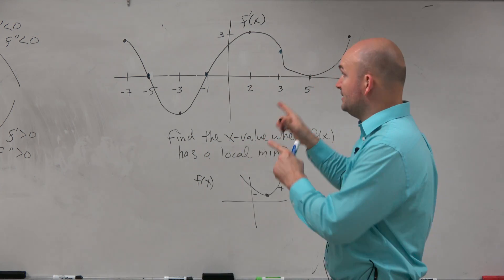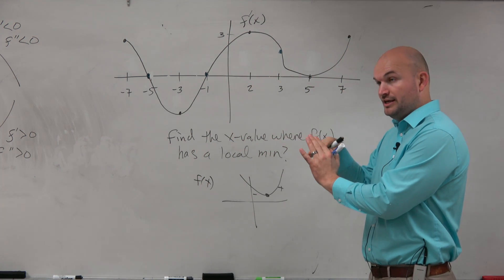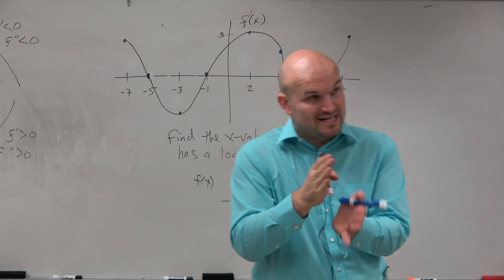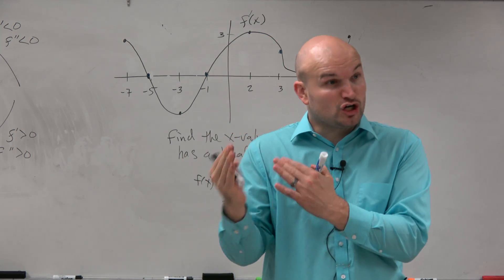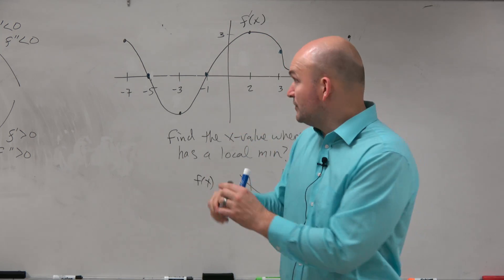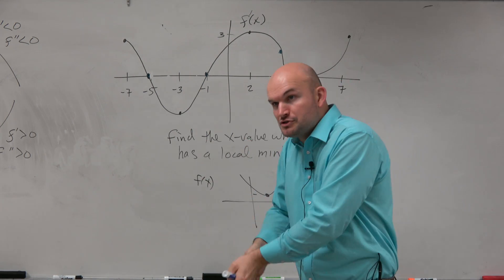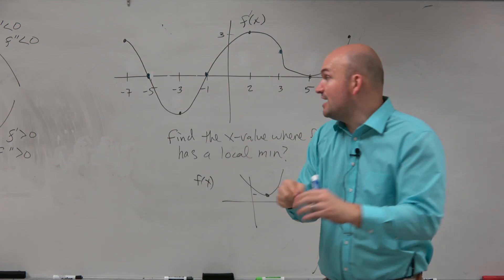Now, we look at this and say, all right, the values when we change from positive to negative, negative to positive, are critical values. So if we had some function, we would find the first derivative, set it equal to 0, and find those critical values.